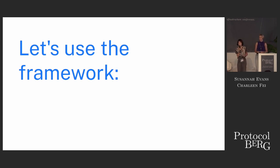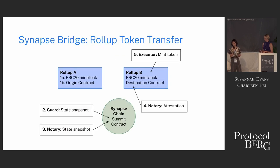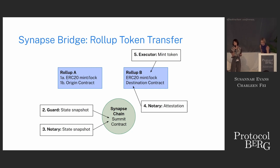Now that we've seen this modular framework, I'm going to take you through two examples of how we can apply it. The first one is called Synapse Bridge, used for a lot of token transfers between rollups. The way it works at a high level: you have an ERC-20 contract deployed on all the rollups in this interchain network. That contains mint and lock functions. A user submits a transaction to lock a token to start a token transfer process.